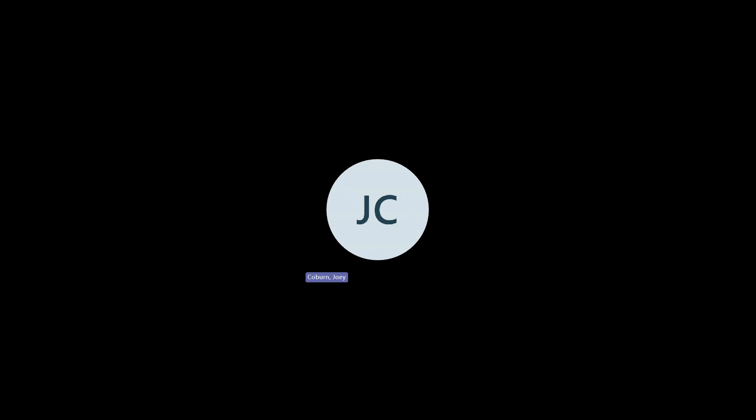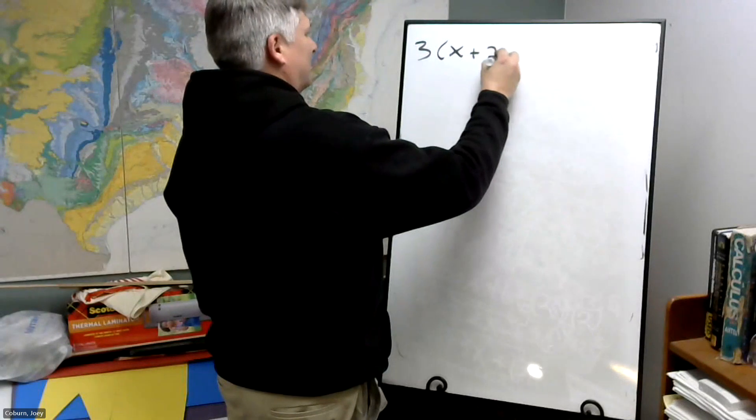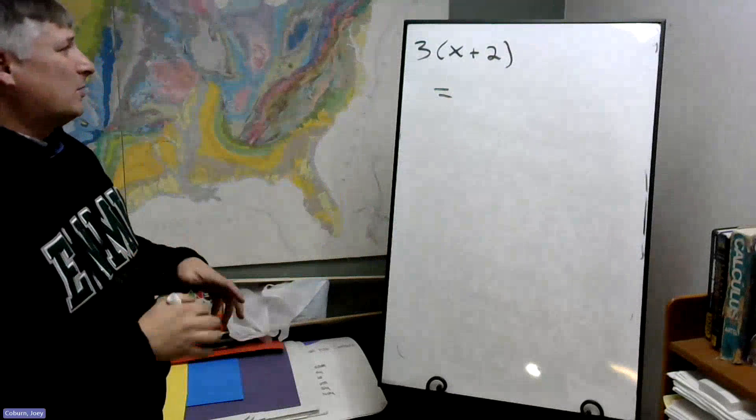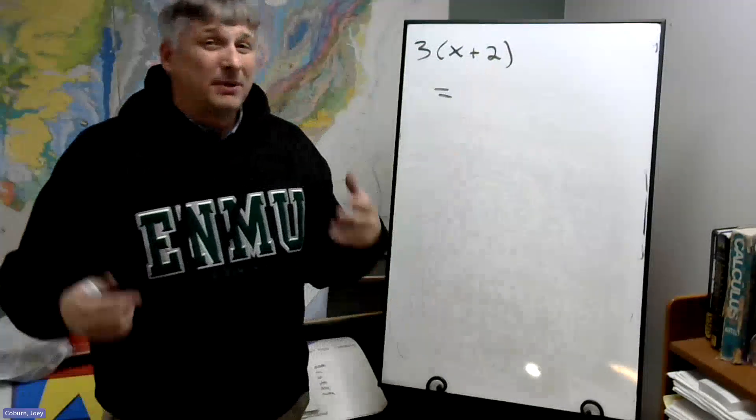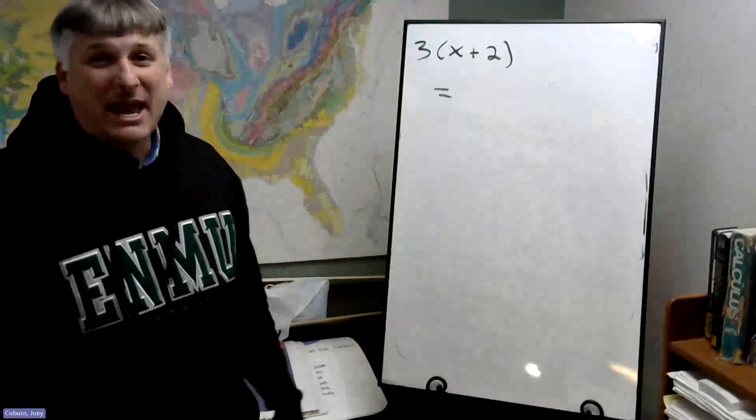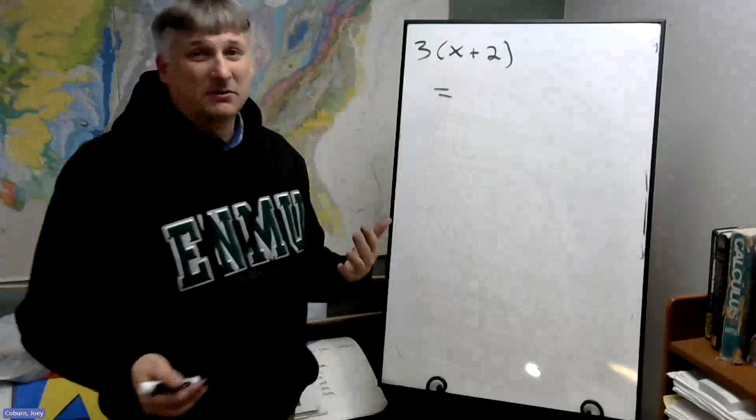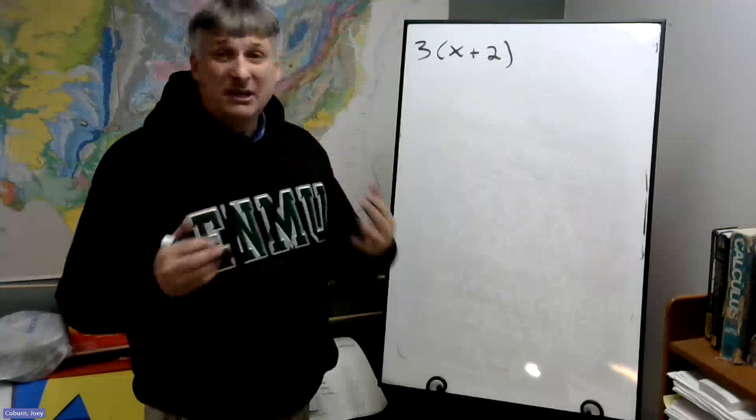So the next thing to talk about is distribution. What do we do with this? Well, according to PEMDAS we would have to add the x and the 2, but because we don't know what x is, we can't add it to 2 yet, so we're stuck. This appears to be the only thing we can do, but there is something else, and to do that we need a trick.